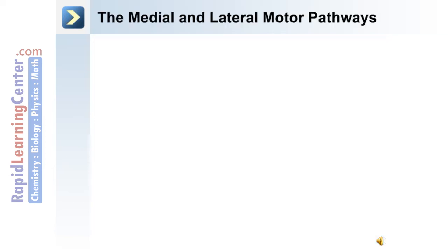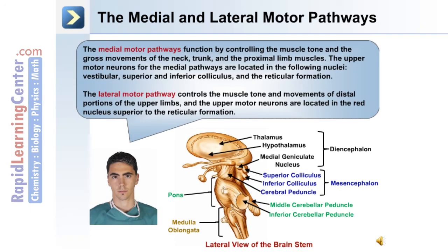The other two motor pathways of the body are the medial and lateral motor pathways. The medial motor pathway functions by controlling the muscle tone and the gross movements of the neck, trunk, and proximal limb muscles. The upper motor neurons for the medial pathway are located in the vestibular nuclei, posterior superior and inferior colliculus, and the reticular formation. The lateral motor pathway controls the muscle tone and movements of distal portions of the upper limbs, and the upper motor neurons are located in the red nucleus, superior to the reticular formation.